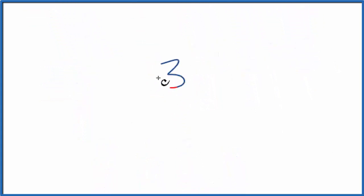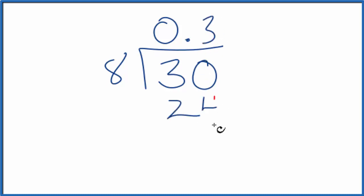We take 3 and we want to know how many times does 8 go into 3? 8 doesn't go into 3, so we'll put a 0 and a point. Now we can make this 30 here. 3 times 8 is 24. That gives us 6 left over.